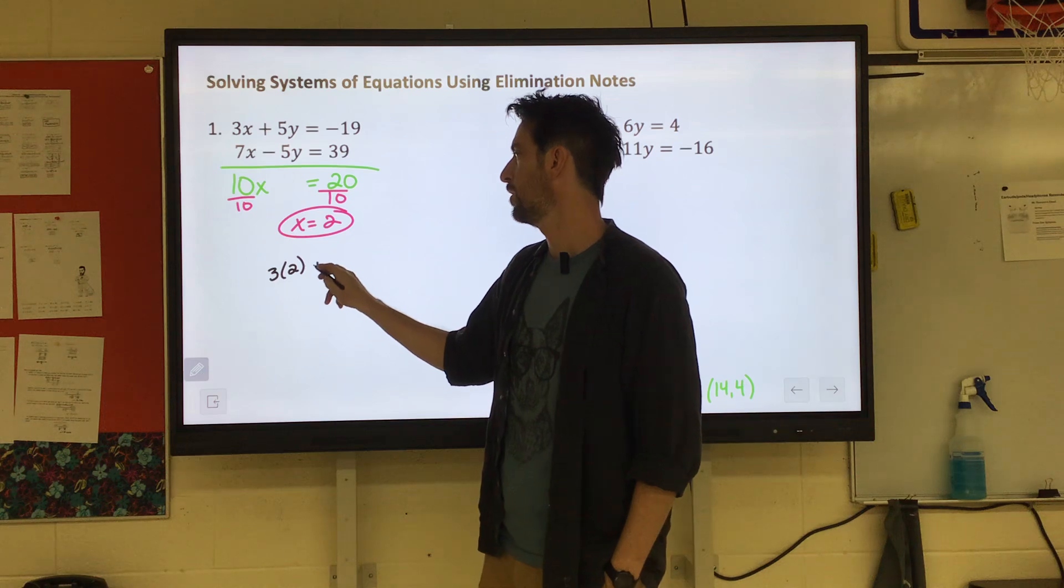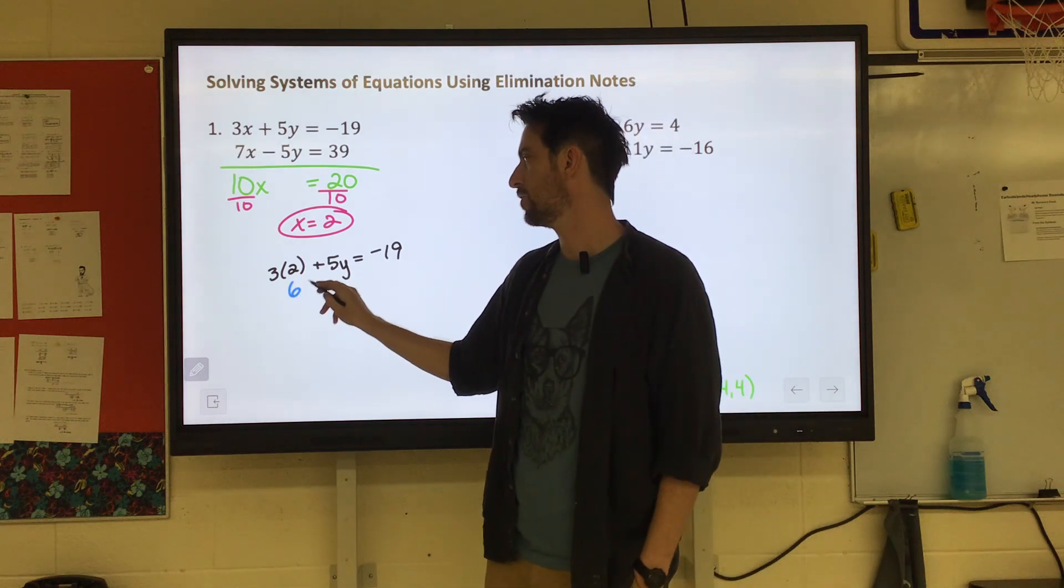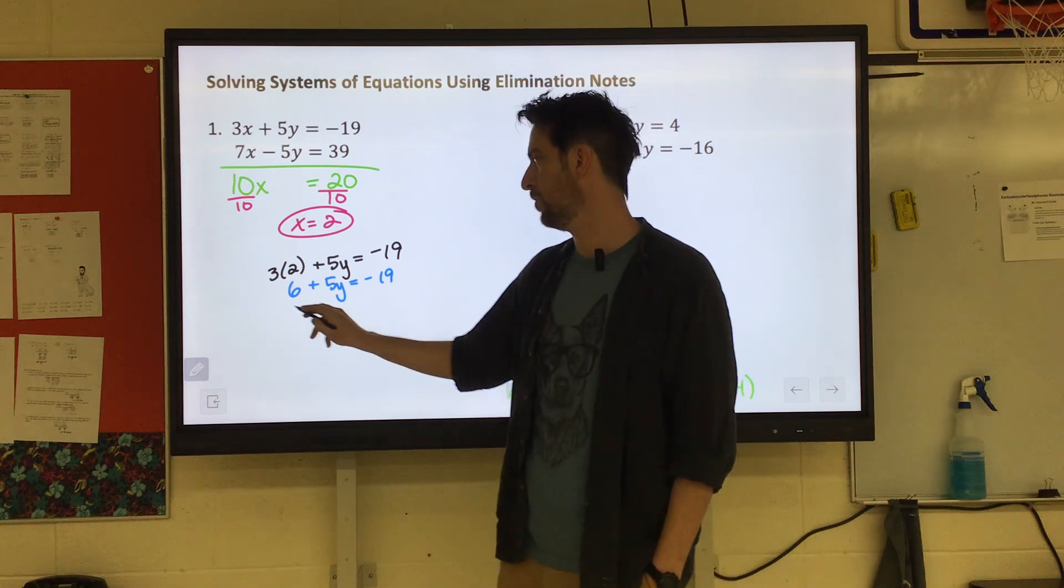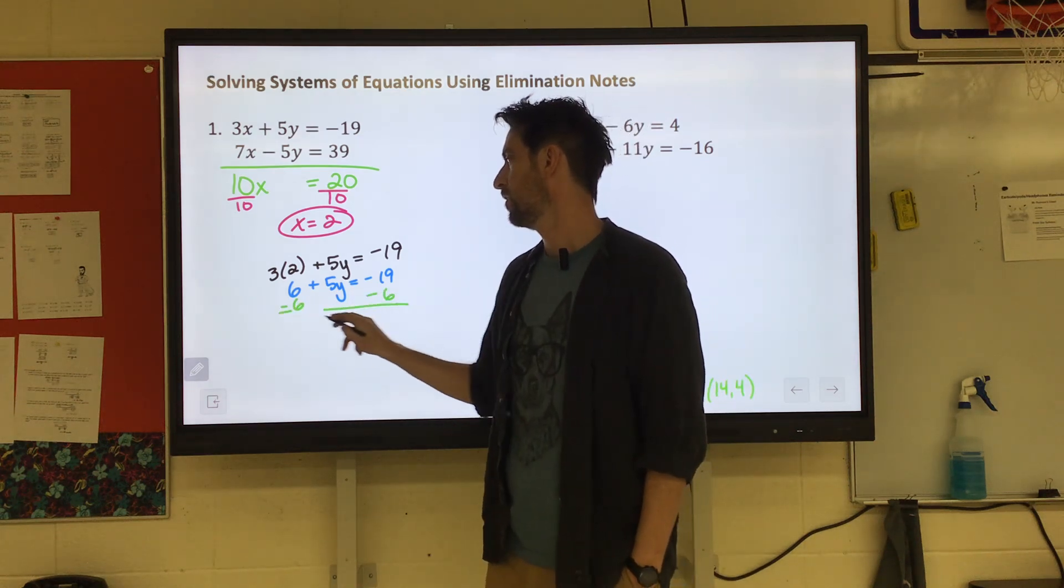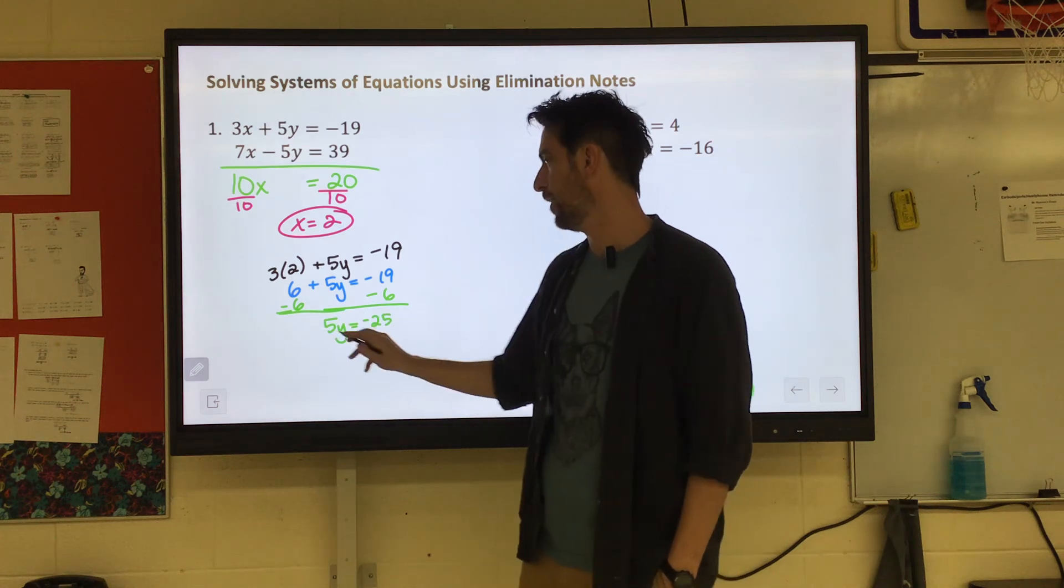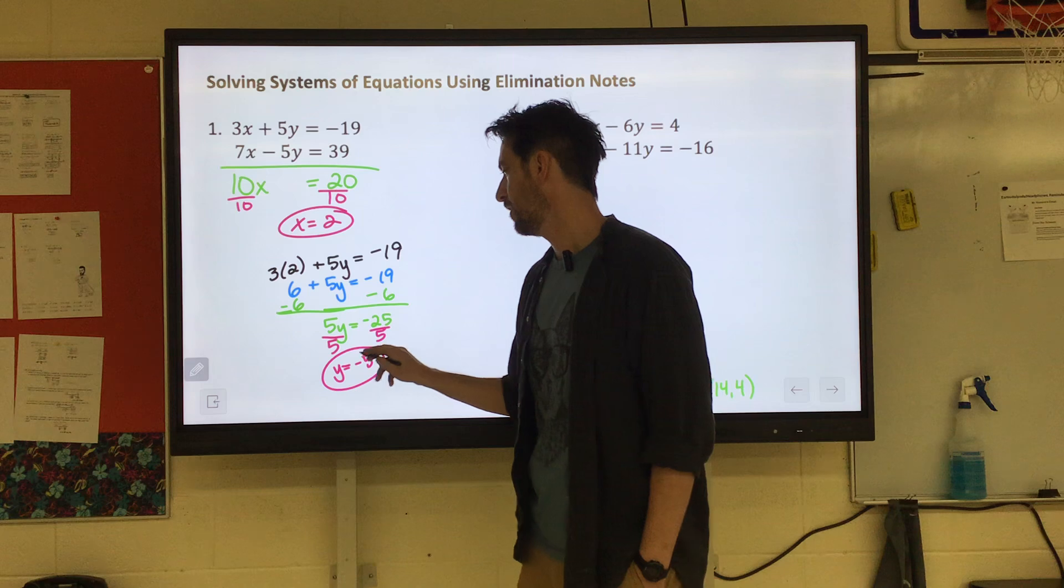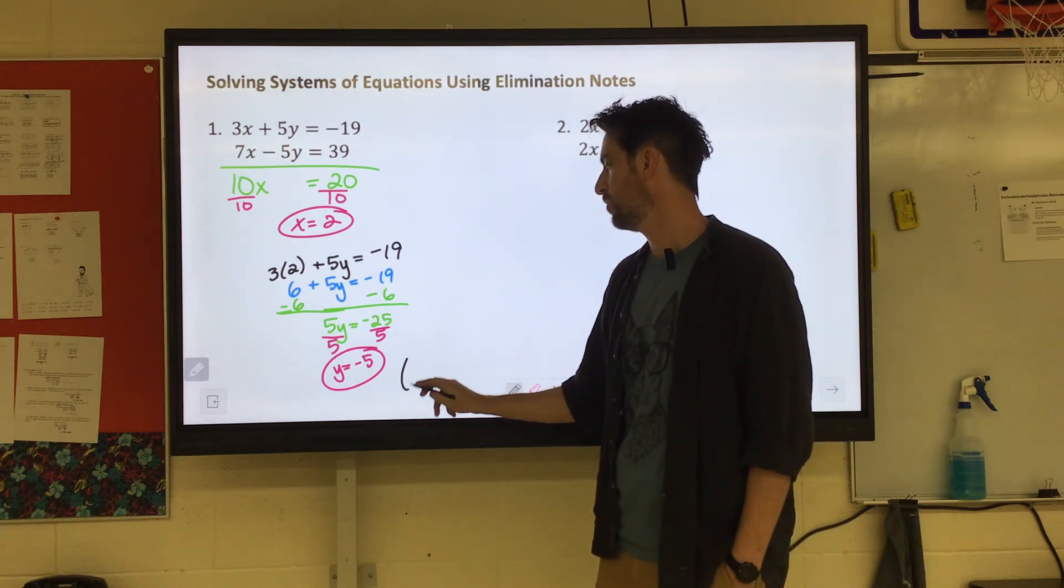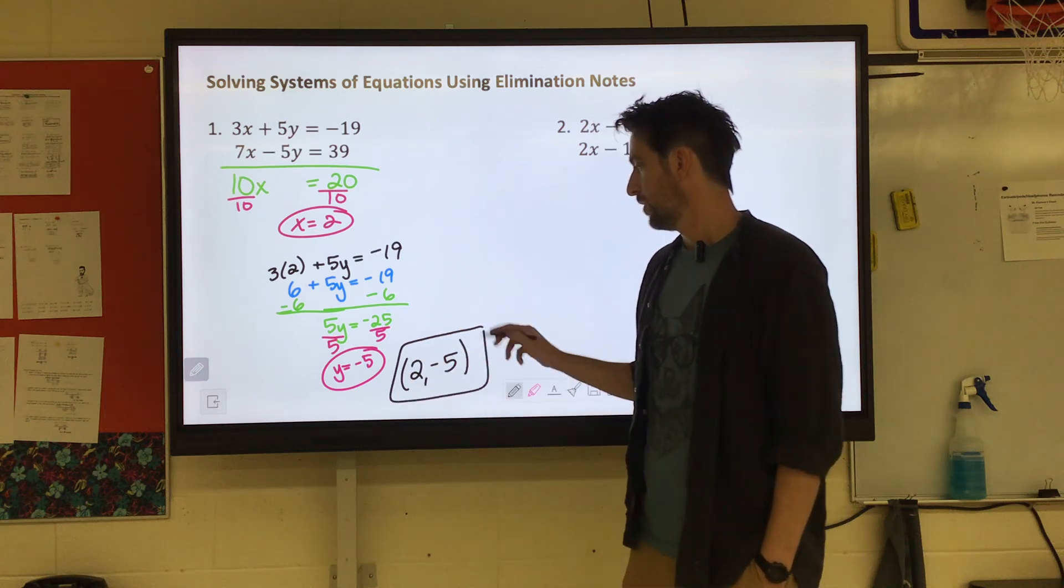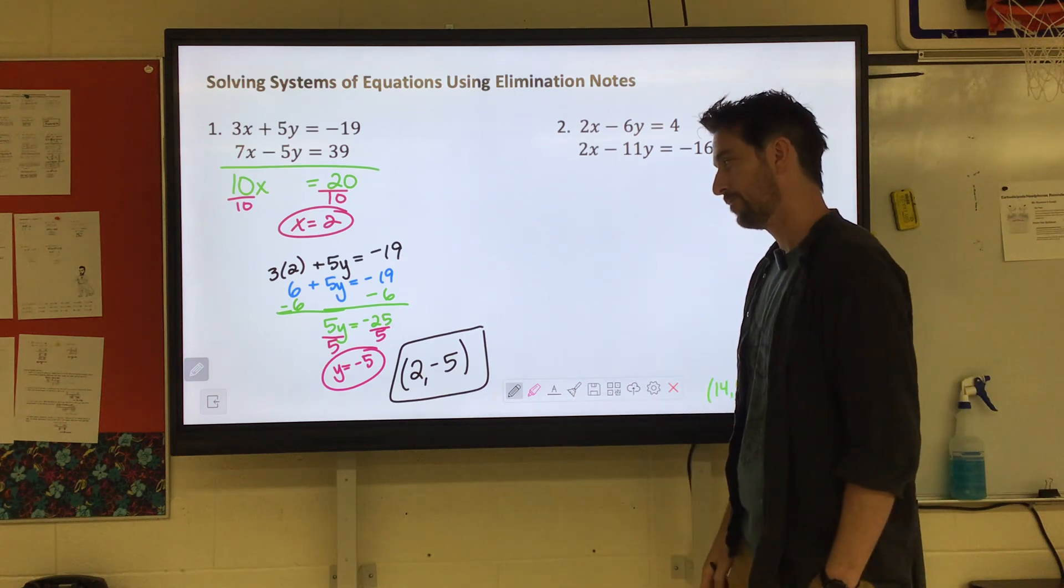3X, 3 times 2 plus 5Y equals negative 19. 3 times 2 is 6 plus 5Y. We'll go ahead and subtract the 6. 5Y equals negative 25. And then we just have to divide it by 5. And we get Y equals negative 5. So writing that then as a coordinate our X was 2, our Y was negative 5. That would be if we were to graph those two equations they're going to intersect each other at 2 negative 5.